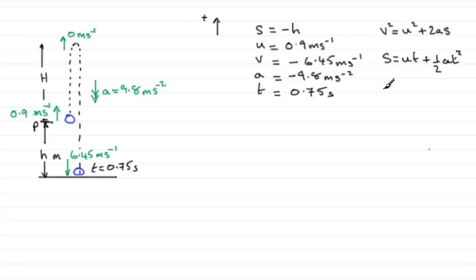You could even use S equals VT minus a half AT squared. Or you could use S equals U plus V, all multiplied by T over 2. Now, which one of these equations would I want to use? Well, I certainly would want to use the simplest. And I think this is the simplest.